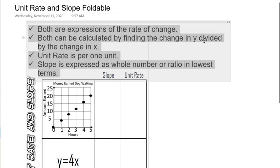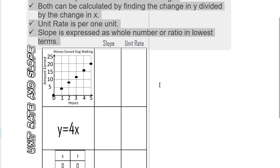Those are some things you need to write up there. That's what they both have in common. Unit rate is for one unit, specific to unit rate. Slope can be a whole number or it can be a ratio in lowest terms.